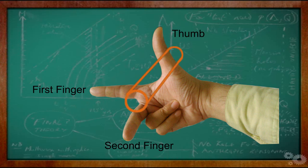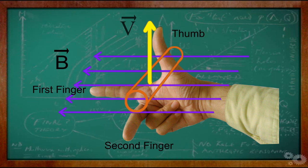The thumb is pointed in the direction of motion of the conductor. The first finger is pointed in the direction of the magnetic field, i.e. north to south.